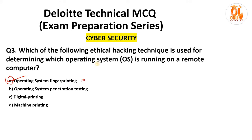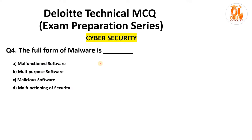The next question: what is the full form of malware? The options are malfunction software, multipurpose software, malicious software, and malfunctioning of security. The answer is option C: malicious software. We all know malware includes things like viruses, trojans, ransomware, spyware, etc. All of these come under malware, and the full form is malicious software.